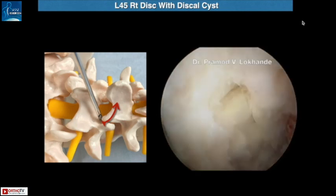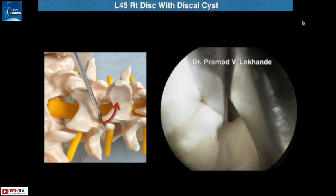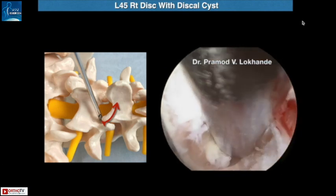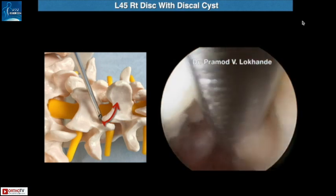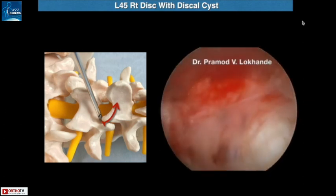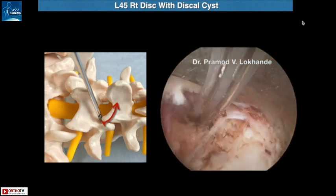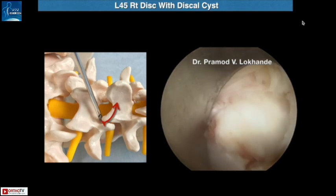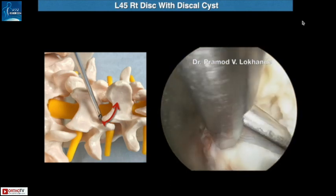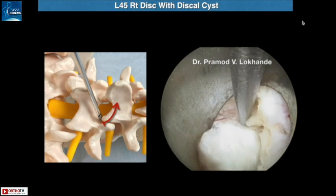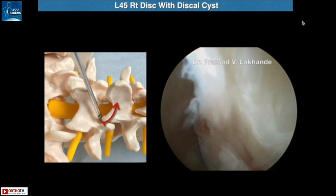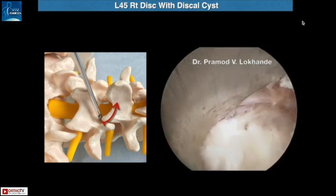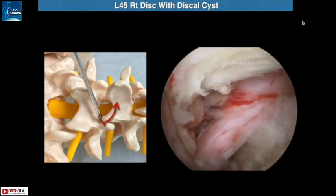Once the interlaminar window is widened, the ligamentum flavum is cut layer by layer until the epidural space is reached. We continue resecting the flavum laterally until the facet joint is reached, to identify the lateral part of the nerve root which can then be retracted. The cannula is then advanced to the base of the spinal canal. Hemostasis is achieved, and the cannula is rotated to retract the nerve root so as to expose the disc. The fragments are released by cutting with the elbow punch forceps, gradually mobilized with a nerve hook, and removed with the disc forceps. Hemostasis is achieved, an additional search is made for any remnant fragments, and this is the finally completely decompressed nerve root.